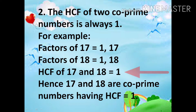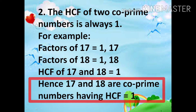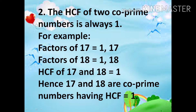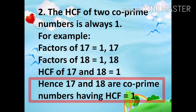So, HCF of 17 and 18 is equal to 1. Hence, 17 and 18 are co-prime numbers having HCF equal to 1.